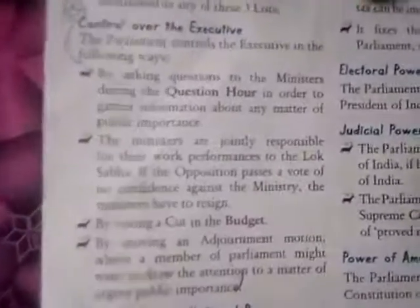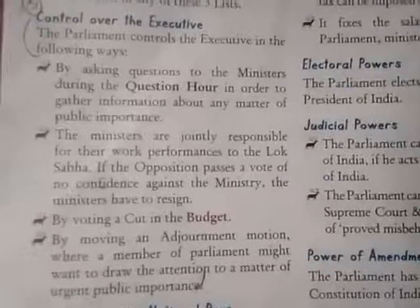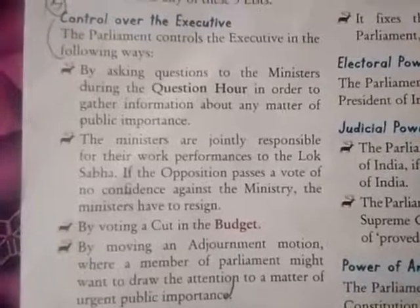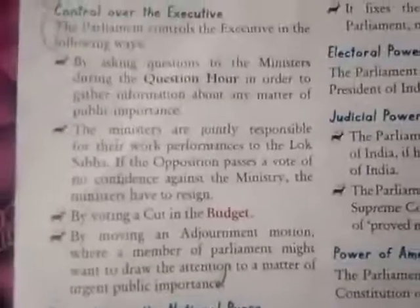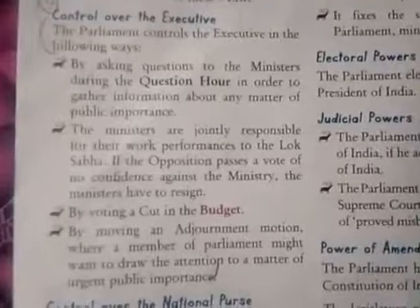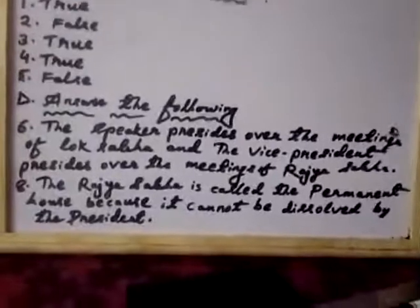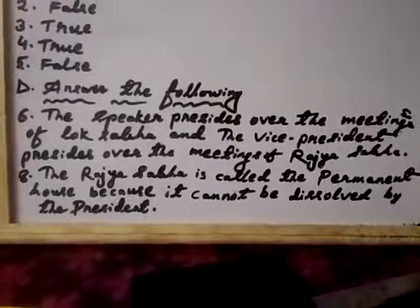Number five answer: how does the parliament control over the executive? Open page 136. Who presides over the meetings of the houses of the parliament? The speaker presides over the meetings of the Lok Sabha and the vice president presides over the meetings of the Rajya Sabha.